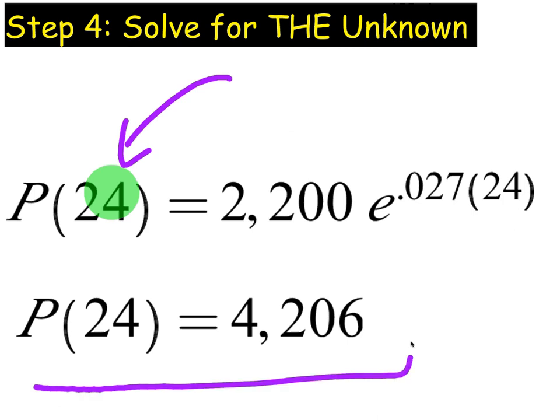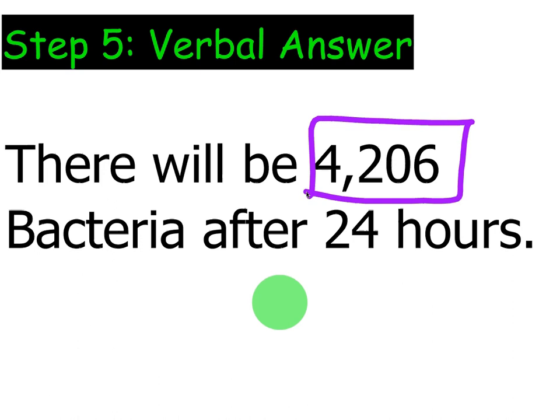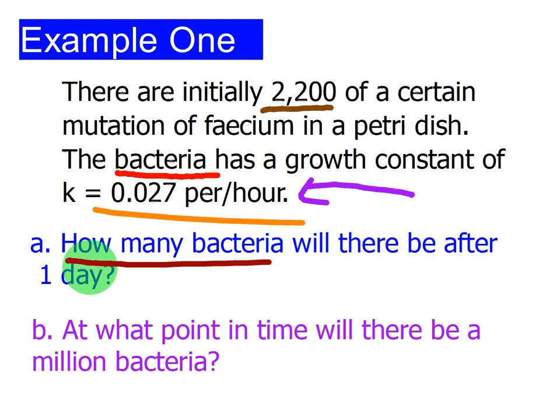We want to put that in context and answer verbally. There will be 4,206 bacteria after 24 hours. This gives us context to the question. If we look back at the original amount, let's see if it makes sense. There were originally 2,200.